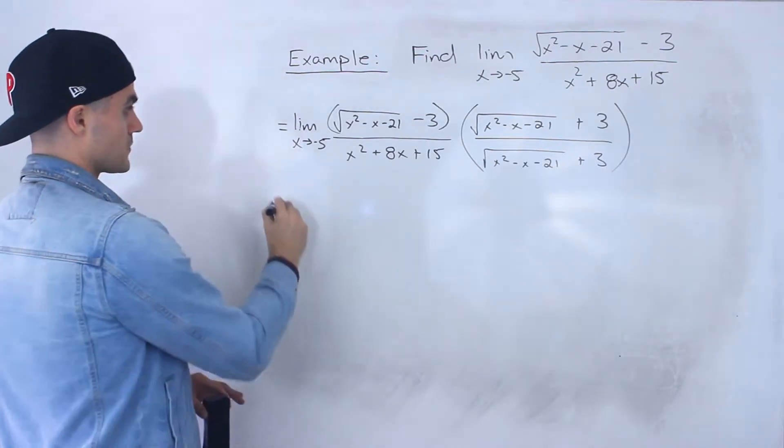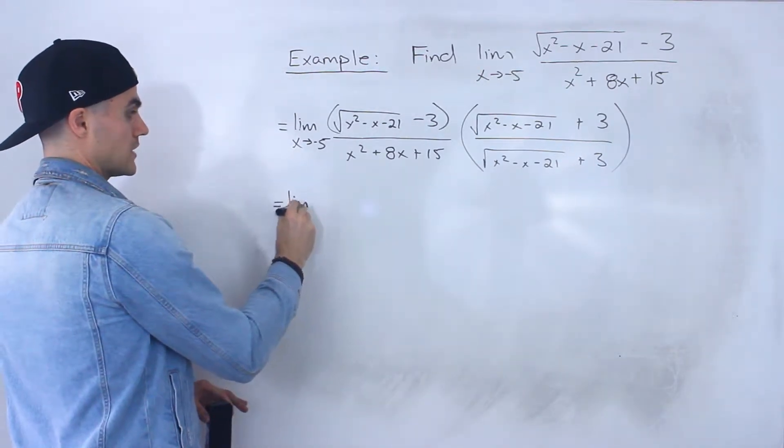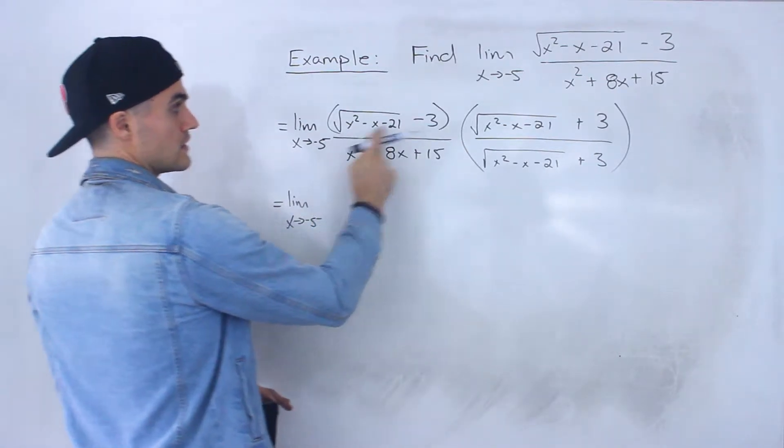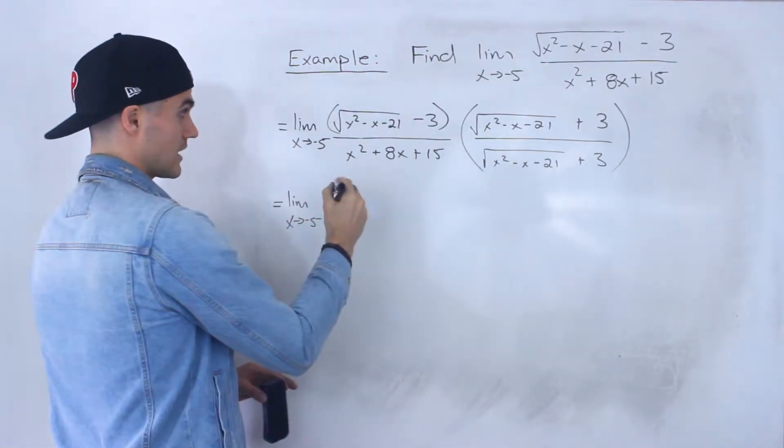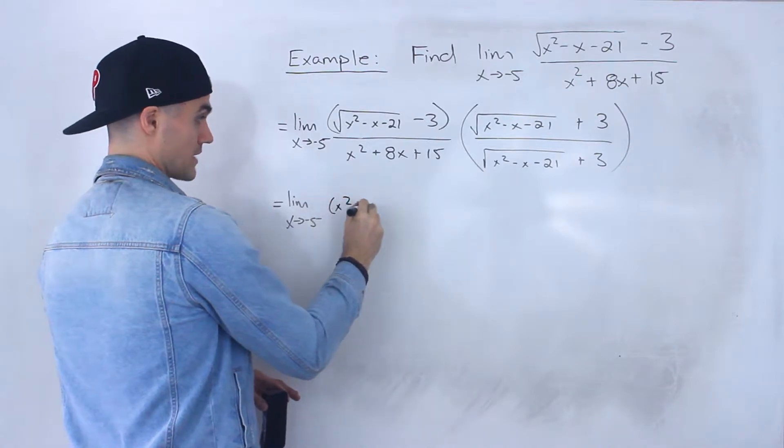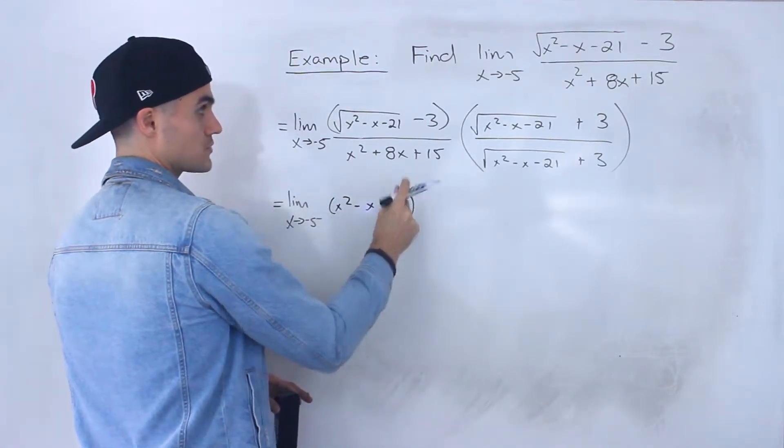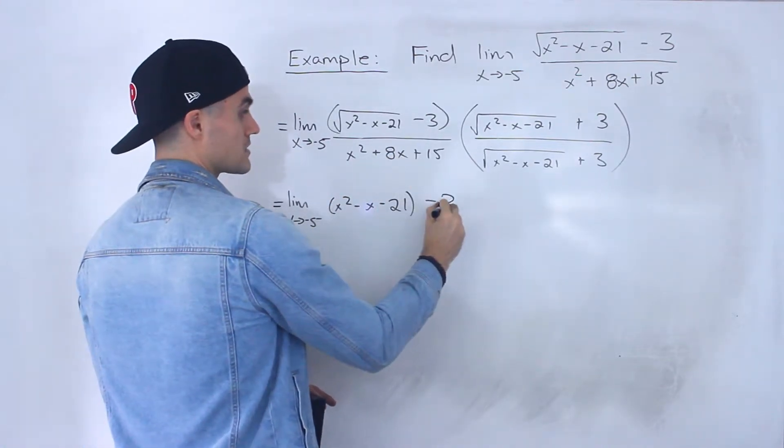And so from here what happens is we'll have the limit as x approaches negative 5. This times that is just x squared minus x minus 21 without the square roots, and the negative 3 times positive 3 is minus 9.